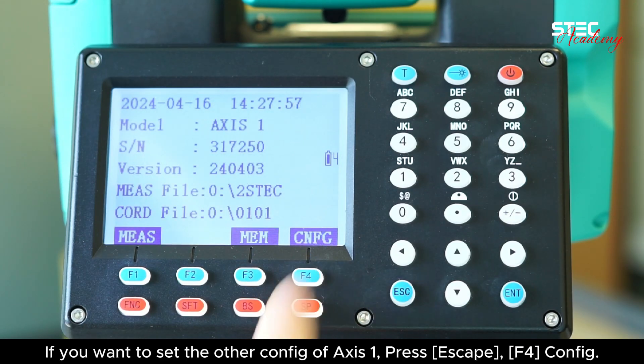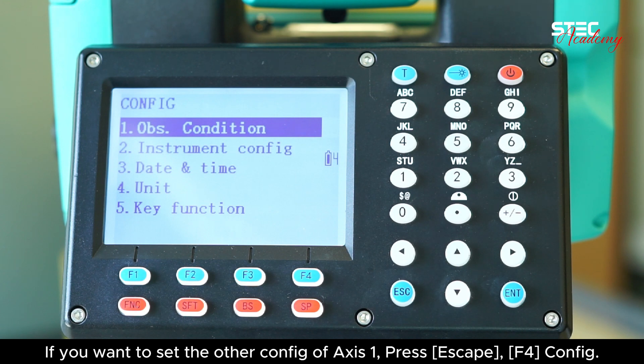If you want to set the other config of AXIS 1, press ESC, F for config.